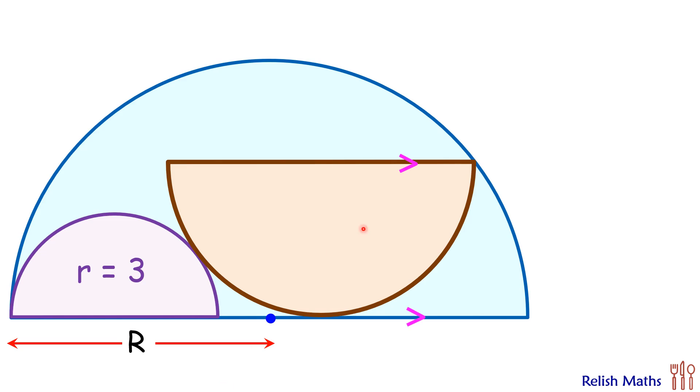So these two lines are parallel to each other with radius 5 cm. Using this data we have to find the radius of bigger semicircle, that's the value of R.